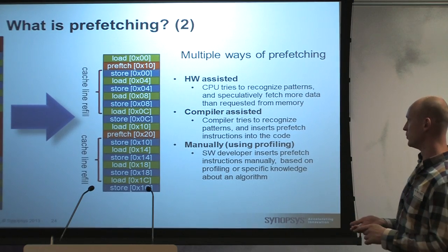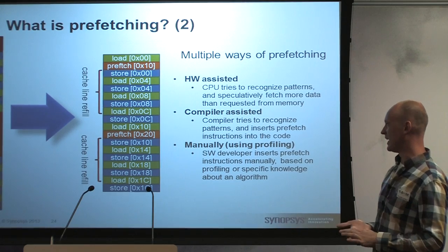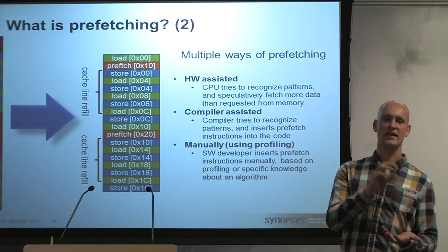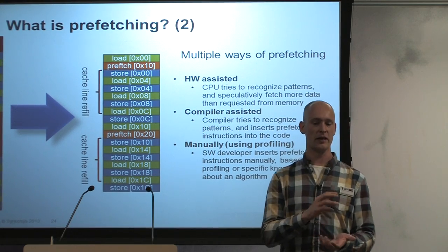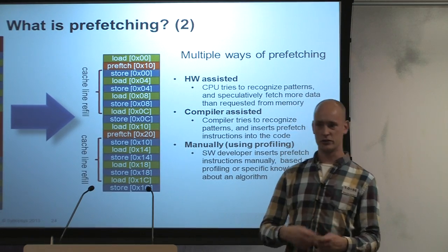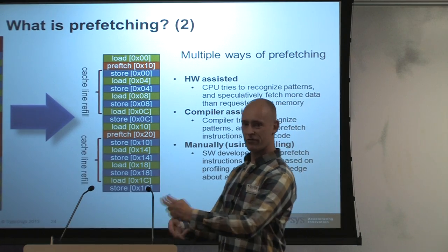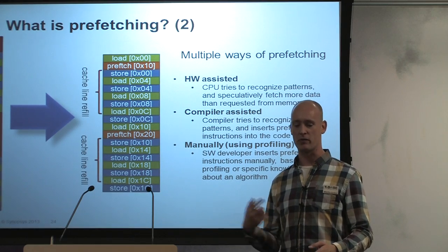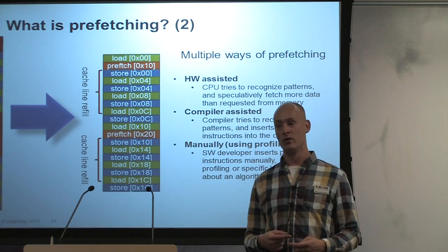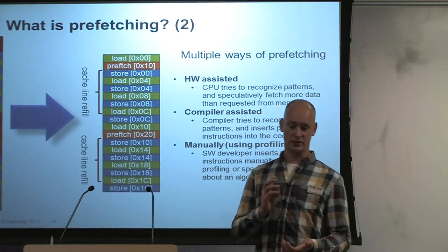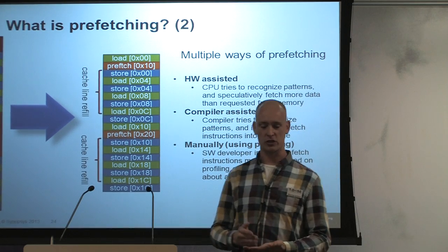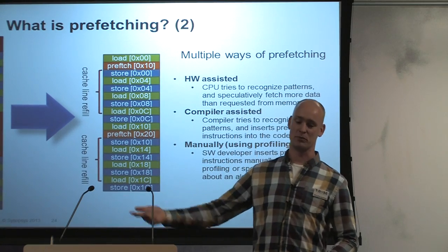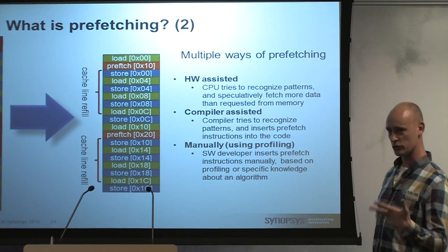There are three prefetching approaches. Software prefetching uses explicit prefetch instructions in the code. Hardware prefetching — common in desktop CPUs — automatically detects sequential access patterns and prefetches in the background, though it costs power and takes time for the CPU to recognize the pattern before it kicks in. Compiler-assisted prefetching uses extra compiler options: the compiler performs static analysis to identify memory-access loops and automatically inserts prefetch instructions where useful.